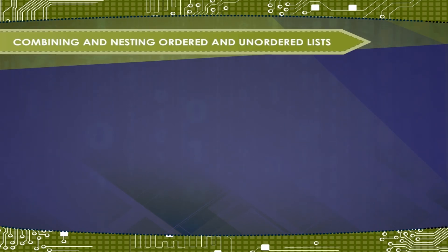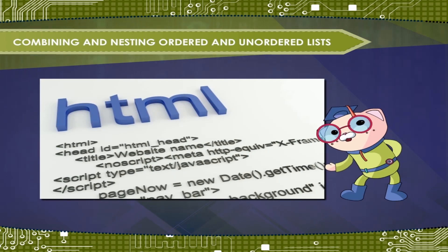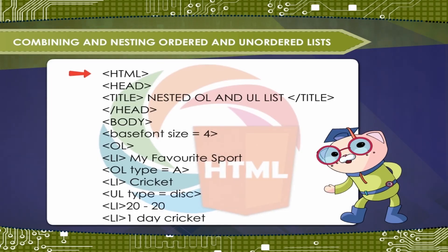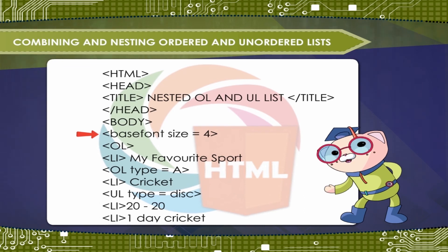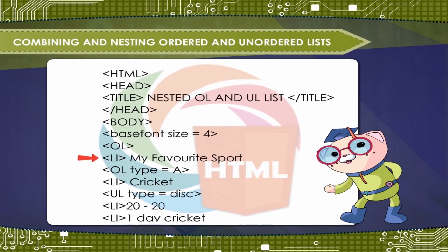Combining and nesting ordered and unordered lists: write an HTML code showing the combining and nesting of unordered and ordered lists. Tag HTML, tag head, tag title — Nested OL and UL list — close tag title, close tag head, tag body, tag base font size equal to 4, tag OL, tag LI — My favorite sport.